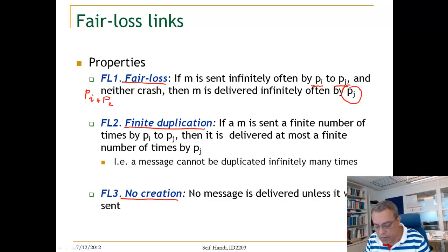Finite Duplication tries to capture the idea that a message cannot be duplicated infinitely many times. So, if a message M is sent a finite number of times by PI to PJ, then it will be delivered at most a finite number of times by PJ, which is the destination.